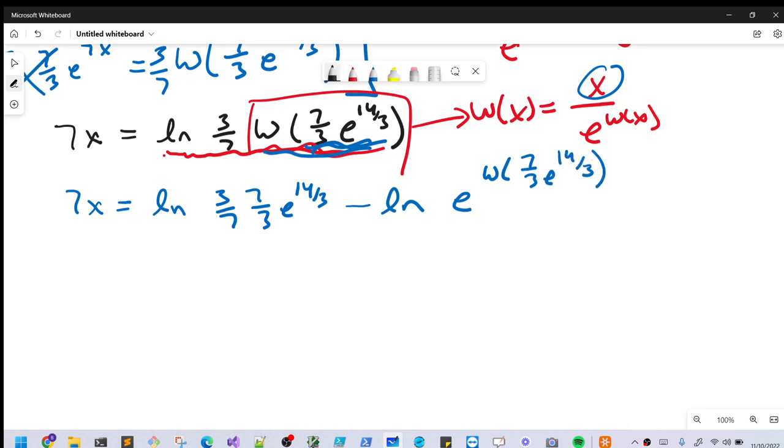Now from here, we get some nice things we can clean up because 3 sevenths times 7 thirds is just 1. And then natural log of e to the 14 thirds is just 14 thirds. So we're going to have 7x equals 14 thirds minus, and then here natural log of e, that's essentially going to cancel. And we're just going to have our Lambert W left over. So we'll have Lambert W 7 thirds e to the 14 thirds.